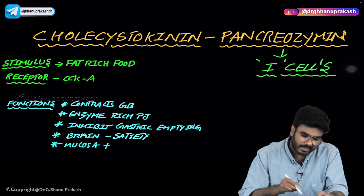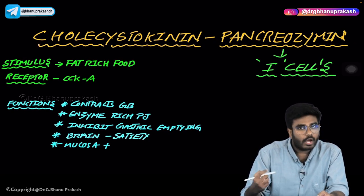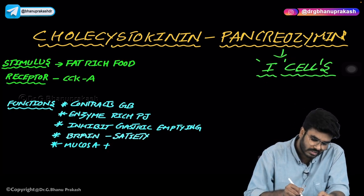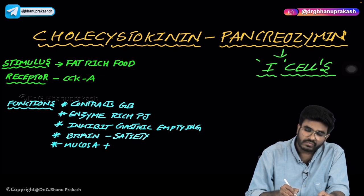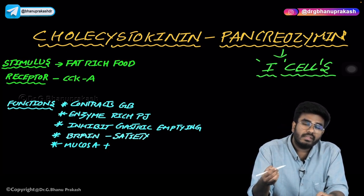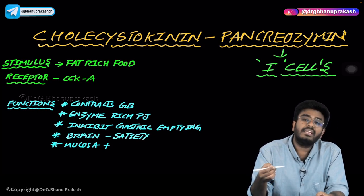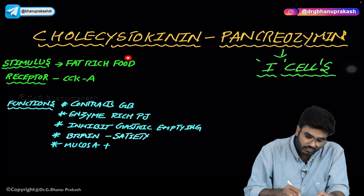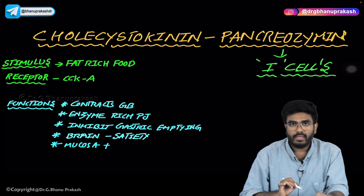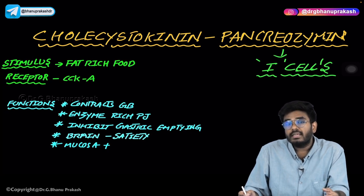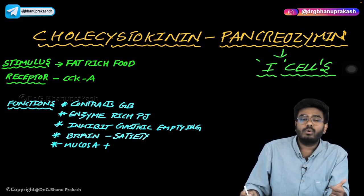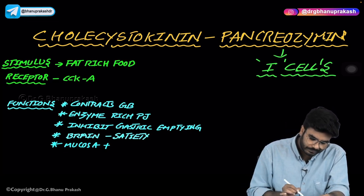Now let's talk about CCK-PZ, cholecystokinin-pancreozymin. It comes from I cells in the duodenum. The stimulus for its release is fat-rich food — whenever there is fat-rich food, it stimulates the release of cholecystokinin. Cholecystokinin causes contraction of the gallbladder, releasing bile for emulsification and digestion of fats. Its receptor is CCKA — that's why gastrin and CCK are in the same gastrin family, both using CCK receptors.